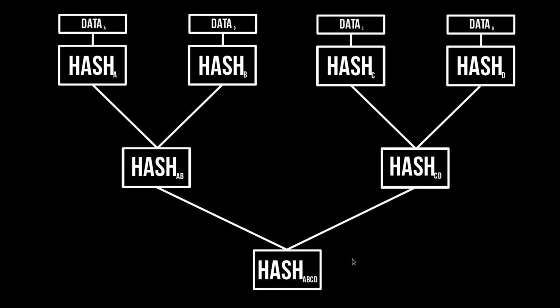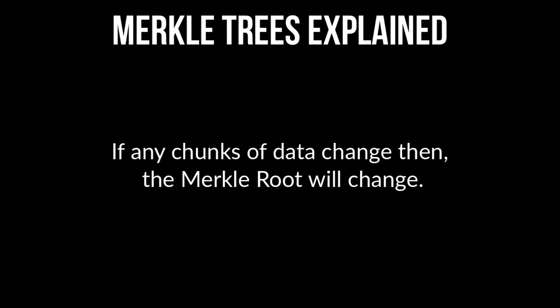This is kind of what a Merkle tree looks like, granted this is an extremely tiny one. Other Merkle trees have thousands of leaves, but a graphic that large would be hard to see on screen. One cool thing with Merkle trees is that if any of the chunks of data change — even if just one bit changes — the entire Merkle root will change. Those changes cascade through the tree, especially since we're dealing with hashes of hashes.